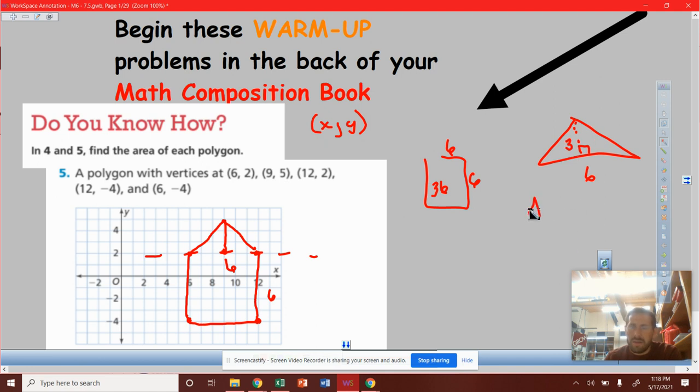And you all should know area of a triangle is one half times the base times the height. Or you're looking at area equals base times height, then divide by two. These equations are the exact same thing.